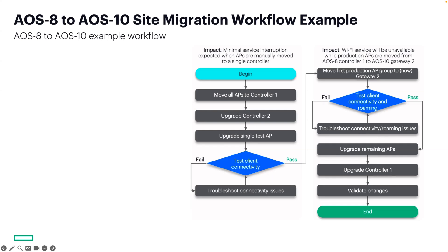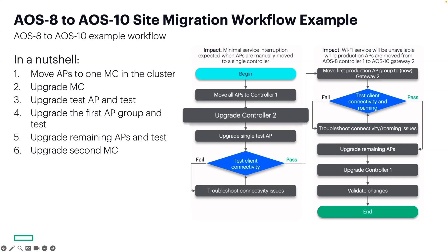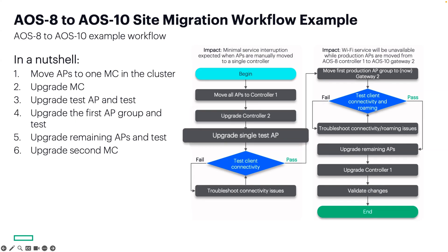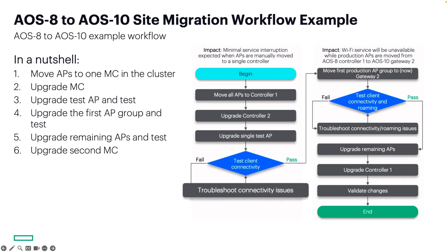We all know that there's always more than one way to do things, especially when network architecture varies so much from one customer to the next. That being said, this is an example workflow you'll find in the VSG upgrade guide. The first step is to verify the two AOS 8 MCs are L2 connected. Then, move all APs to controller 1. Once all APs are on controller 1, upgrade controller 2. Software can be downloaded from the HPE networking support portal. Next, identify a single AP and upgrade it using the AP convert CLI command. Once the AP is converted and broadcasting, test client connectivity, and troubleshoot if there are any issues.